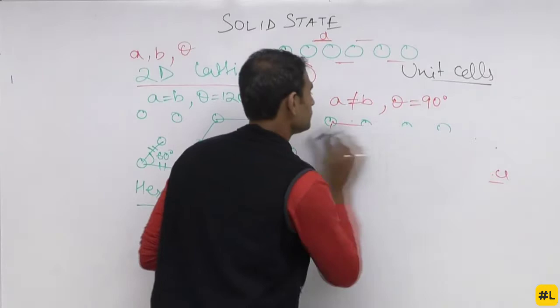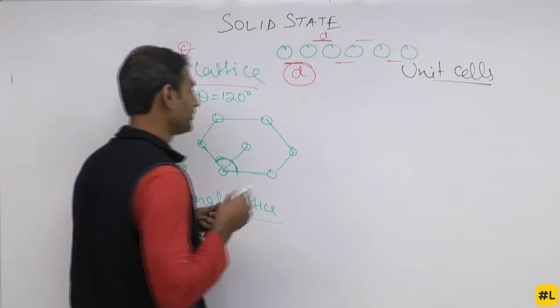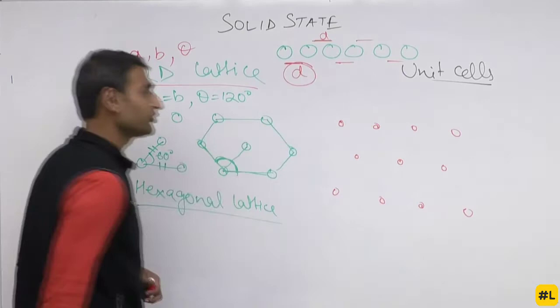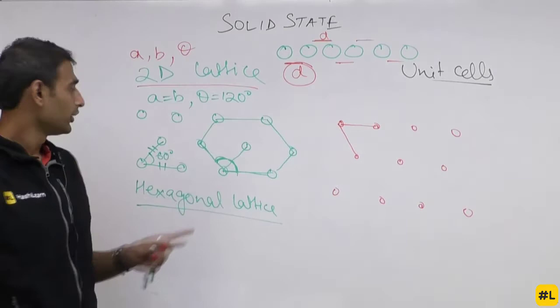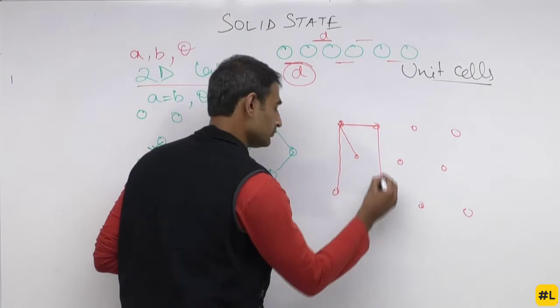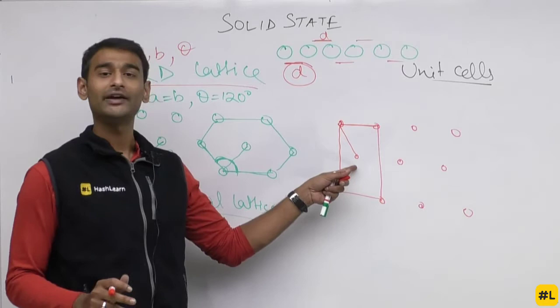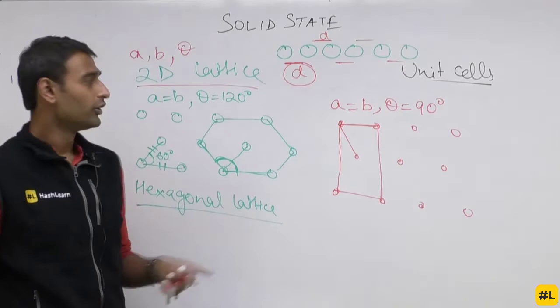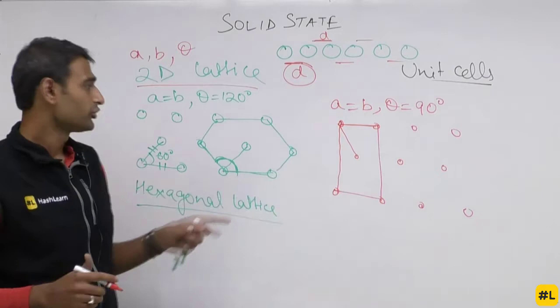There is one more structure similar to hexagonal but different — if the distances are not the same, it won't be hexagonal. This type is called a rectangular lattice with a central point. Here a equals b and theta equals 90 degrees, but the rectangular unit has a central point. This is a variation of the rectangular lattice. We have now covered 4 types of 2D lattice.